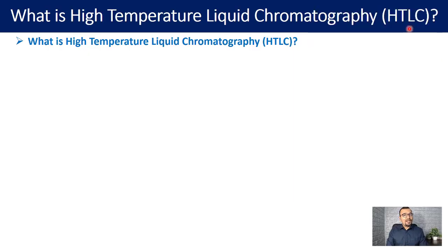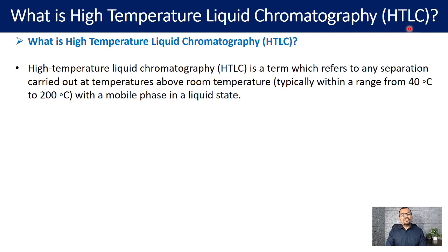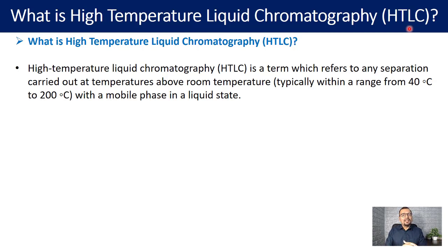So what is high temperature liquid chromatography or HTLC? HTLC is a term which refers to any separation carried out at temperatures above room temperature, typically within a range from 40 degrees Celsius to 200 degrees Celsius, with the mobile phase in a liquid state. You must have used gas chromatography at such high temperatures, but very few people utilize temperature in HPLC method development. If you are using temperature above room temperature during method development, then you can think of using HTLC.